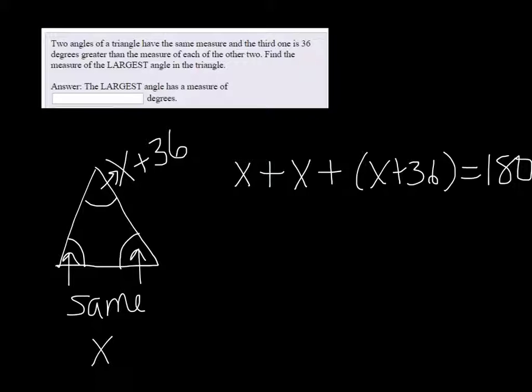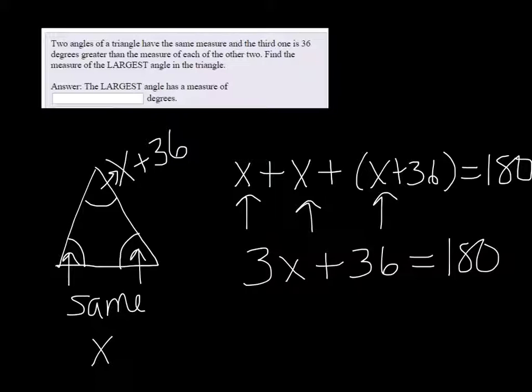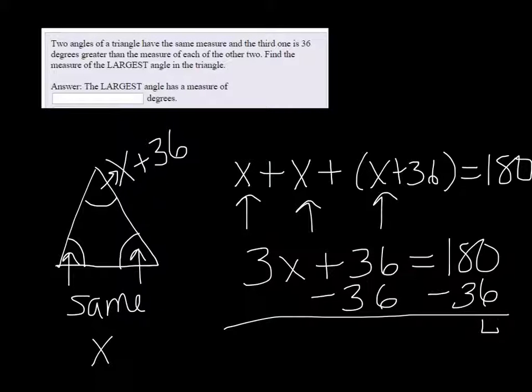So if we combine like terms, we have an x, an x, and an x. That makes 3x plus 36 equals 180. We can subtract 36 on both sides, and that gets us 144. 3x equals 144.